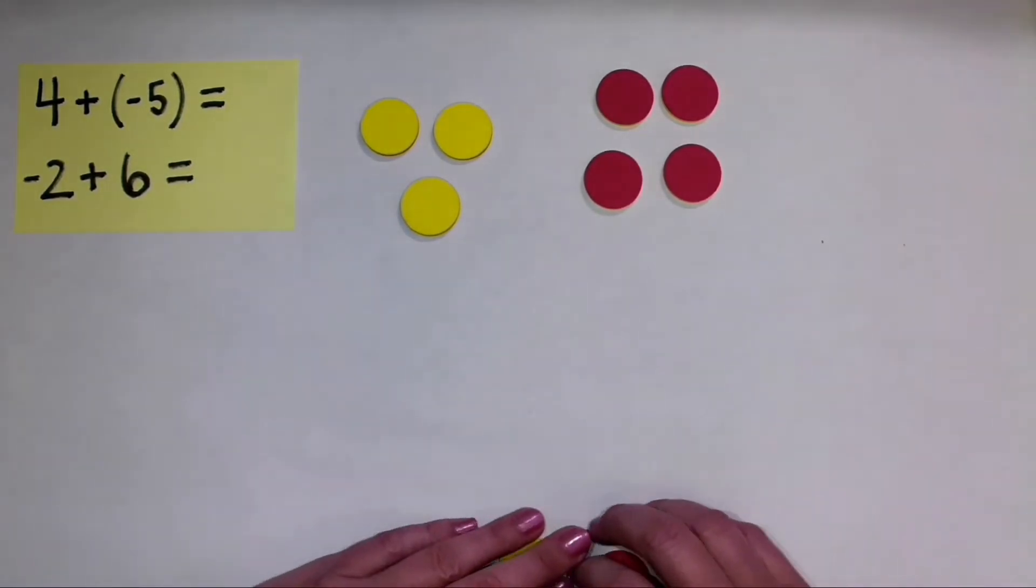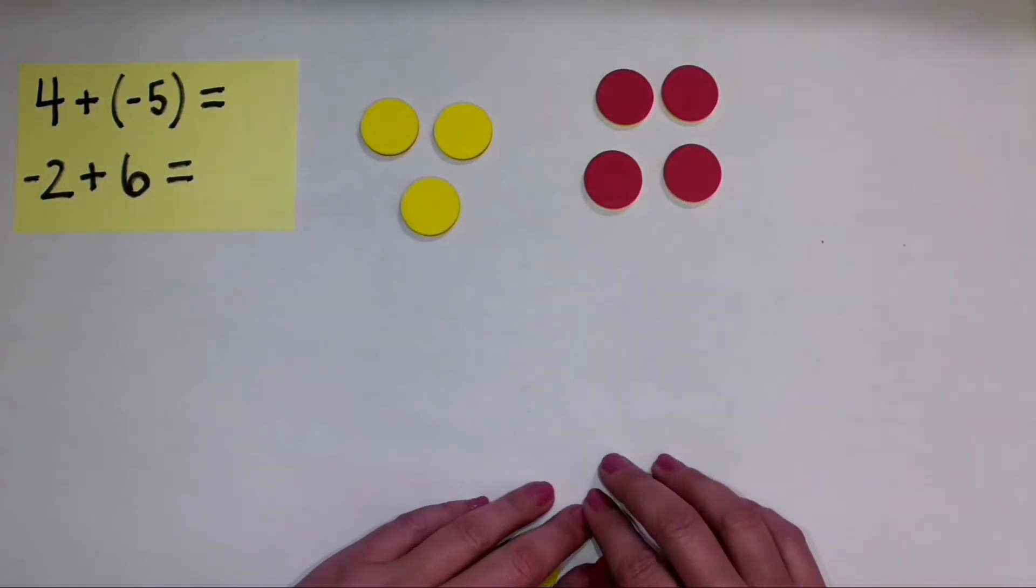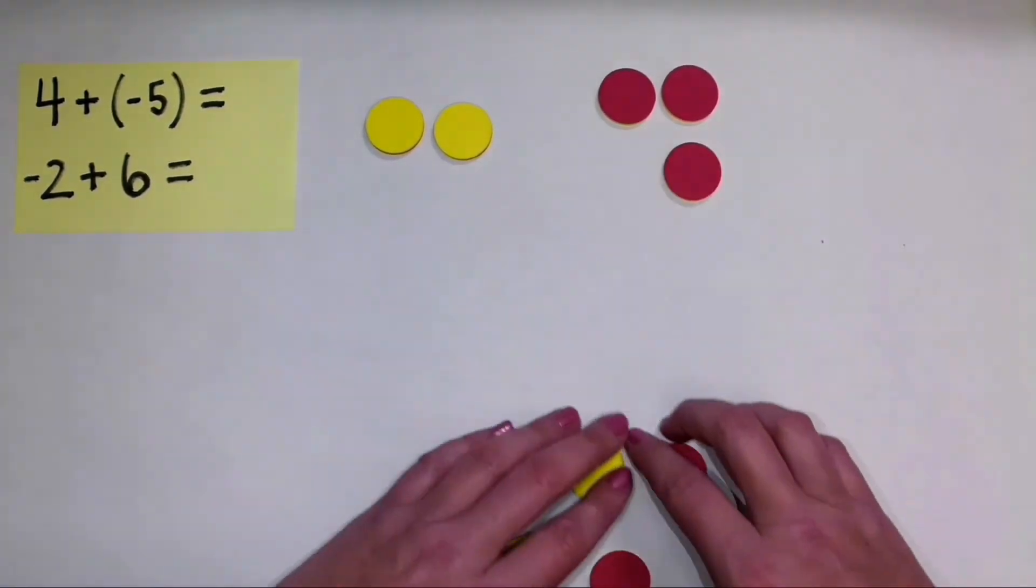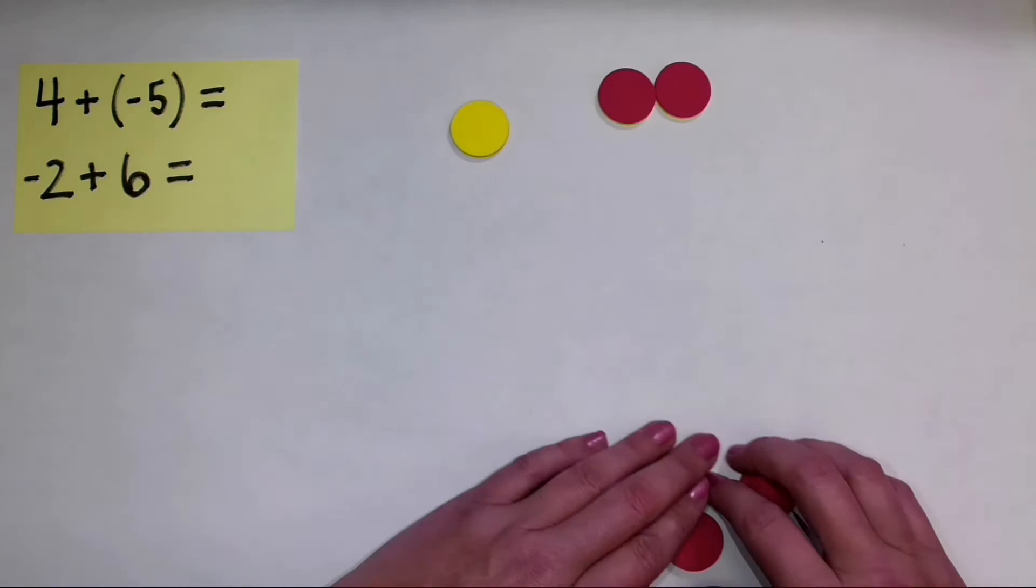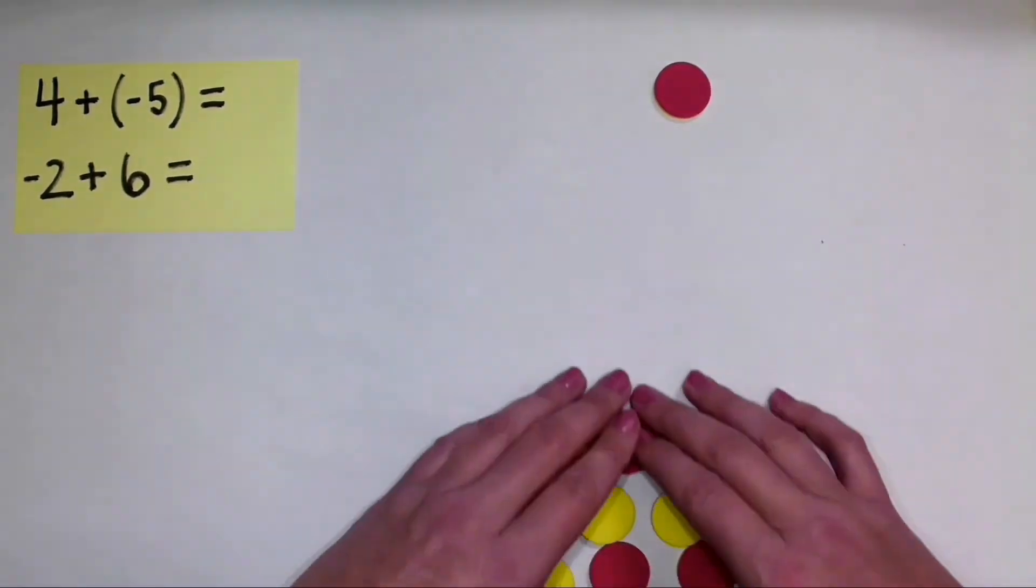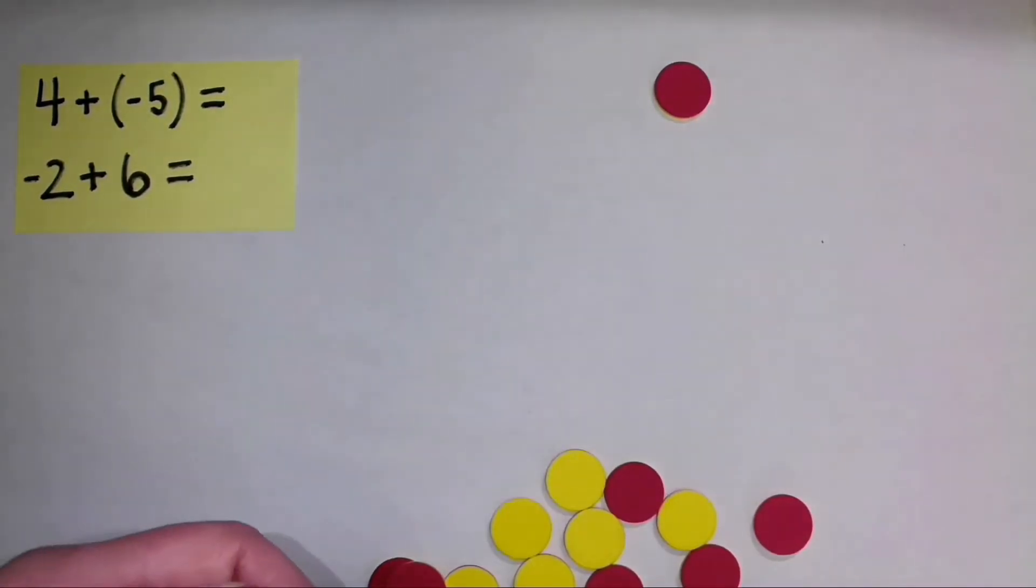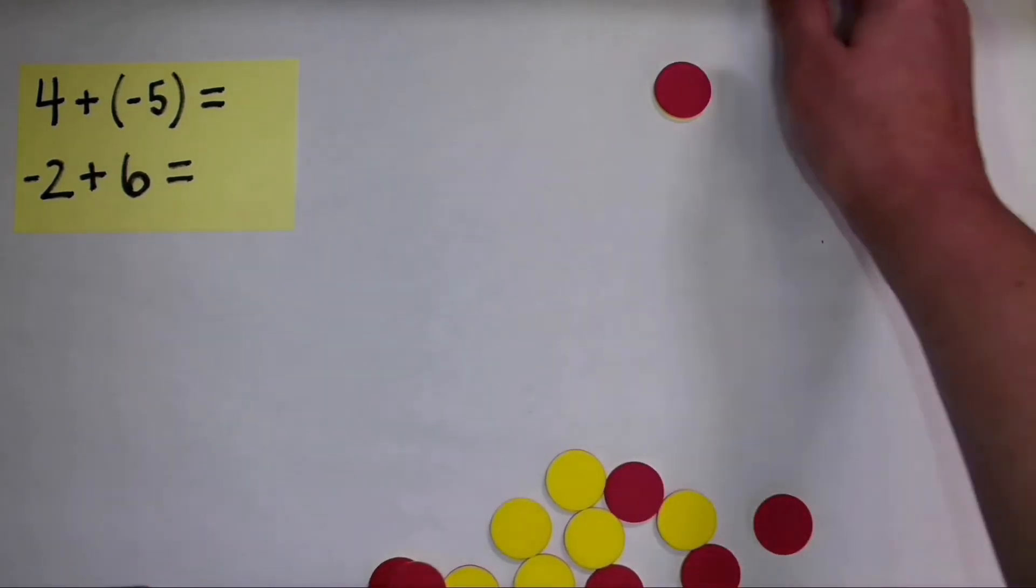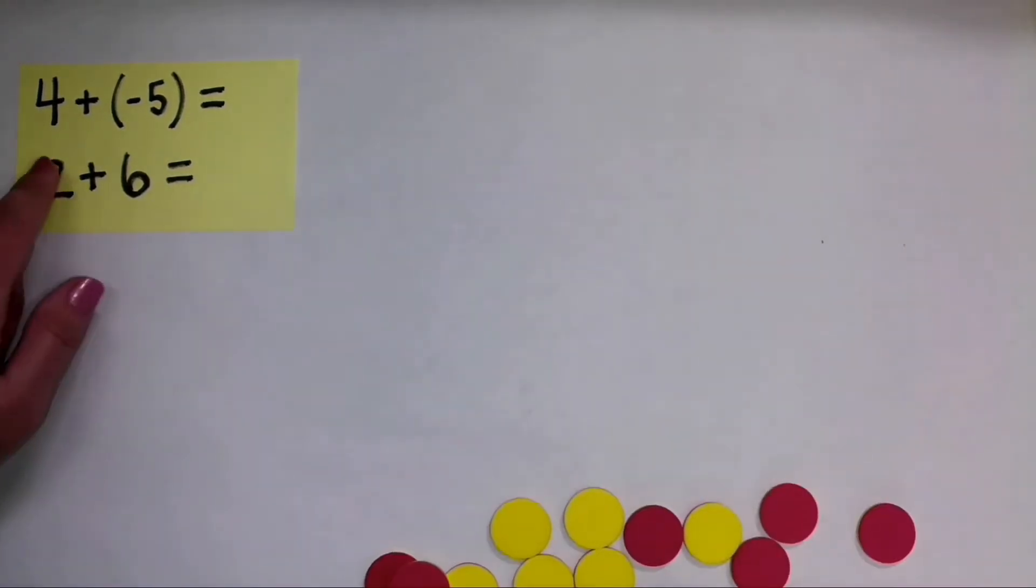And so I'm going to move them off of my adding space. I have another positive and a negative, another zero pair. I have another zero pair, and I have another zero pair. So when I started with positive 4 and added negative 5, my sum is negative 1. So that's how we solved this first problem right here.